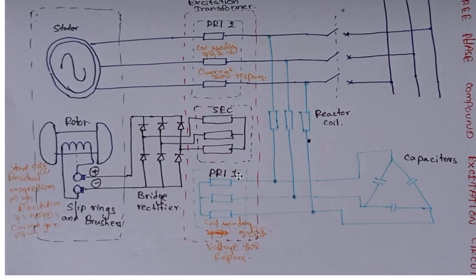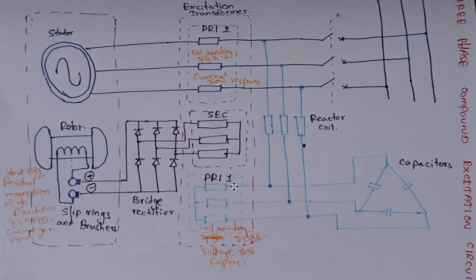The primary one coil winding has a higher number of coils compared to the primary two coil winding. So primary one responds more to voltage, while primary two responds more to current.